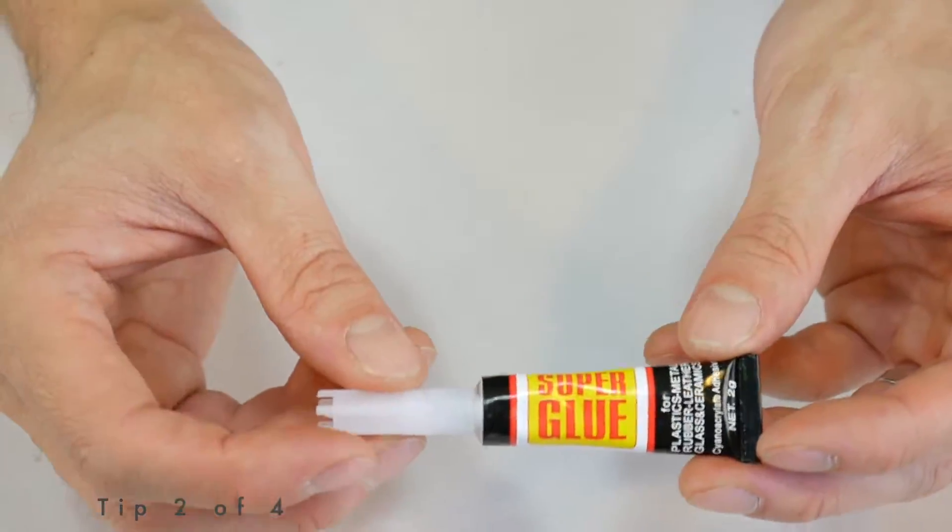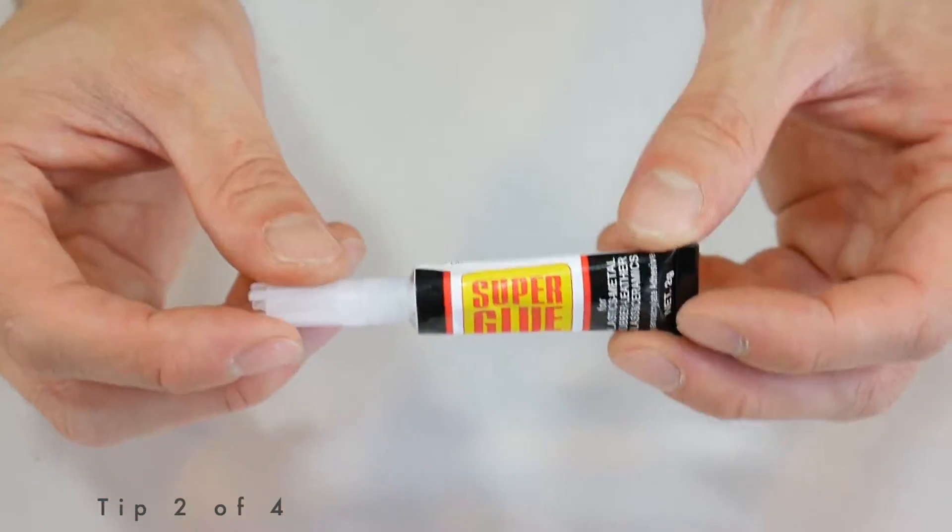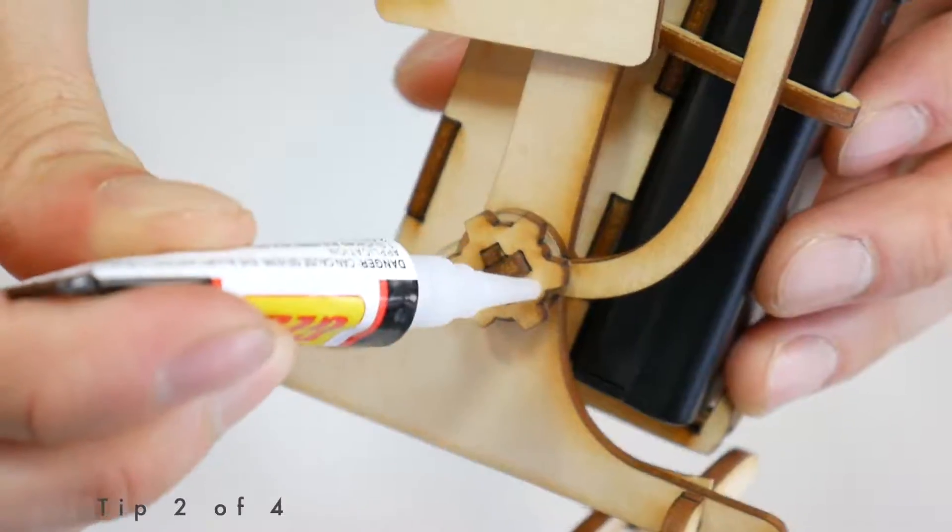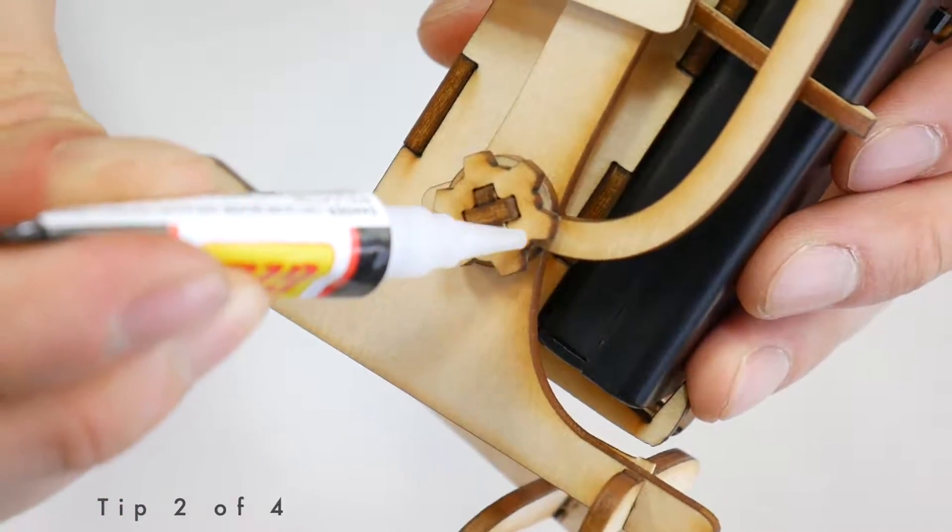Alternatively, if your robot is completely done and you've fine-tuned it and it's working great except something keeps falling out, you can just apply a little bit of super glue to the outside of the fitting.